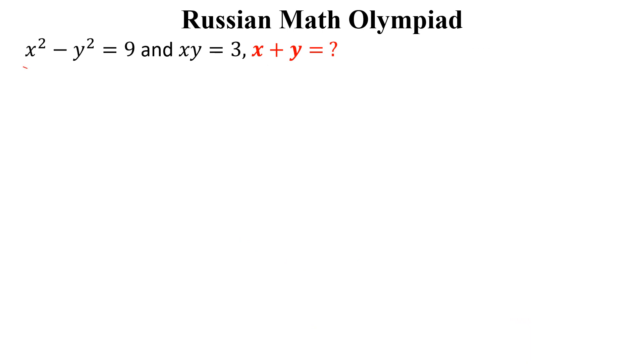The question is: if x squared minus y squared equals 9 and xy equals 3, what is the value of x plus y? How can we solve this?